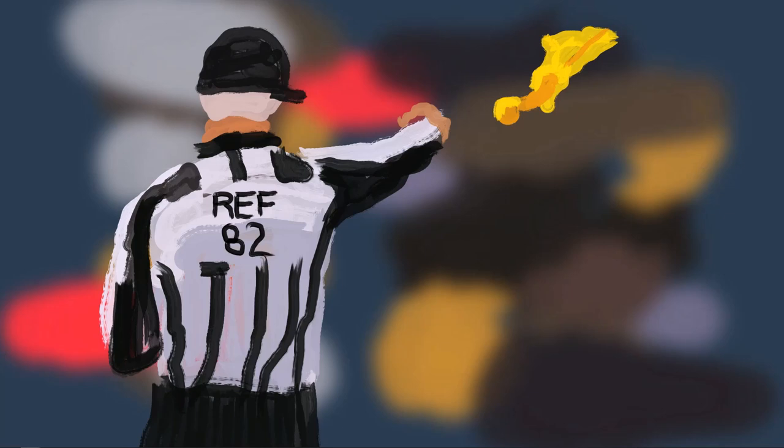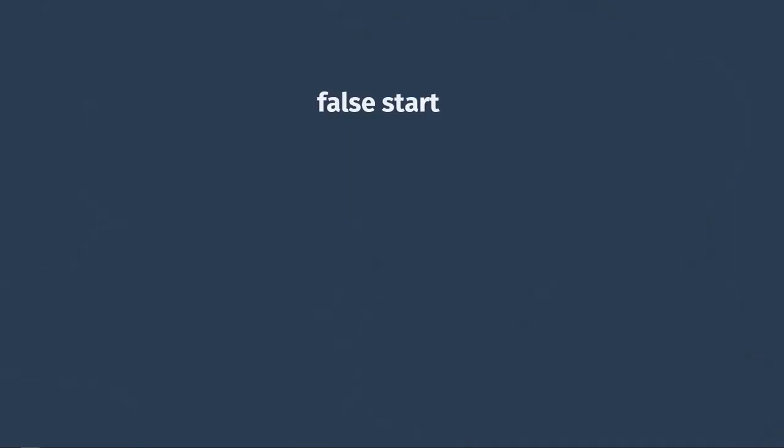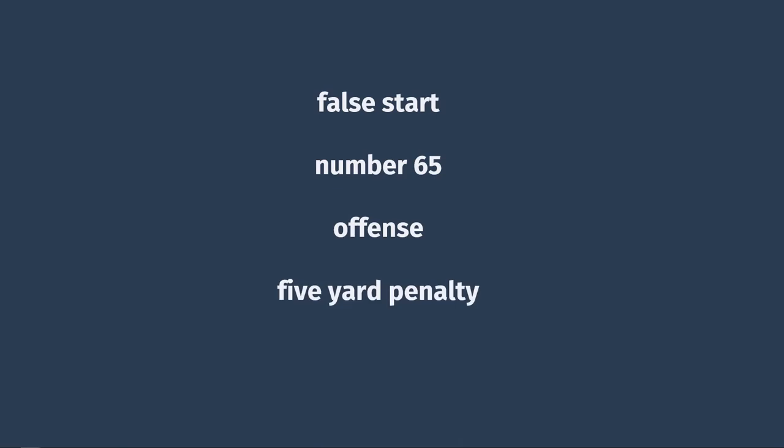When the head referee sees a flag, he'll go over to the ref who threw it and figure out the situation. Then he'll turn on his microphone and make an announcement, saying something like: 'False start, number 65 on the offense, this is a five-yard penalty, replay first down.' So he's giving the reason the foul was called, who committed it, which team it was against, and what the consequences are.